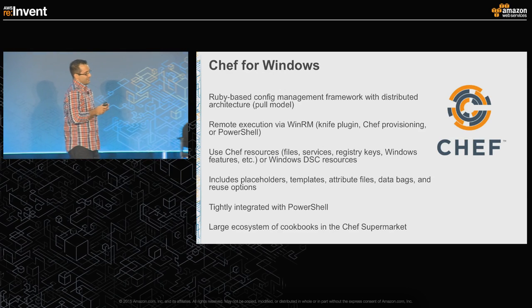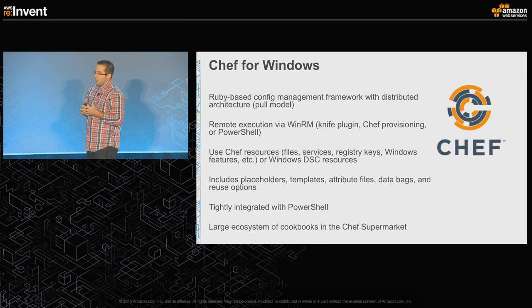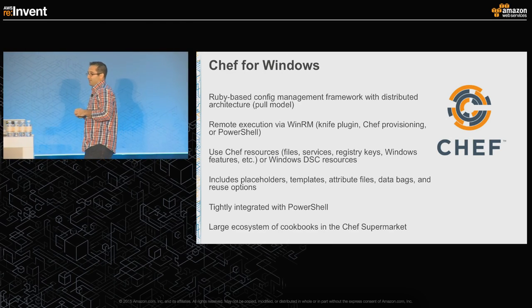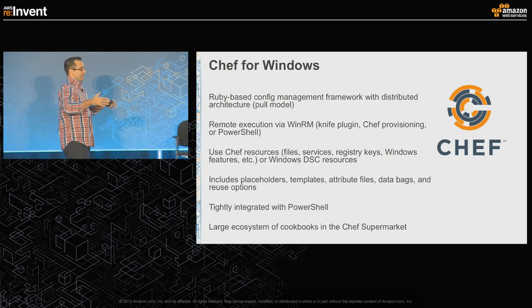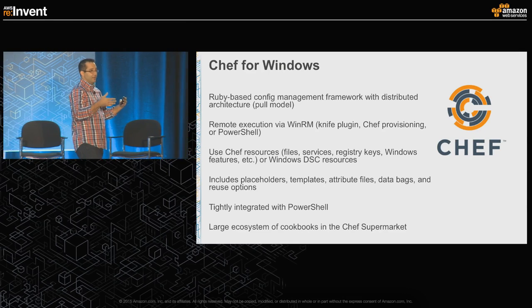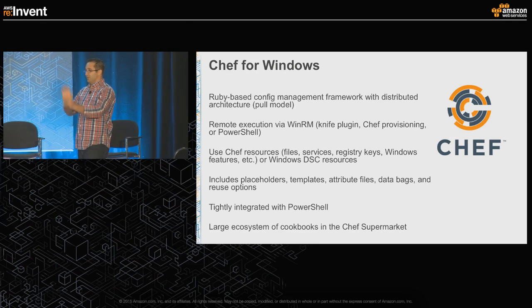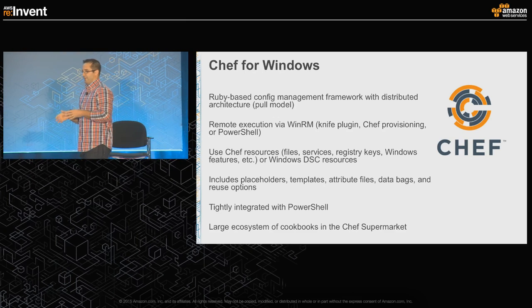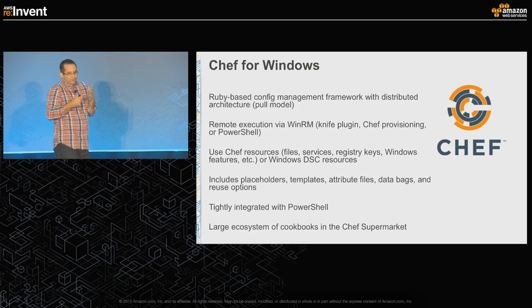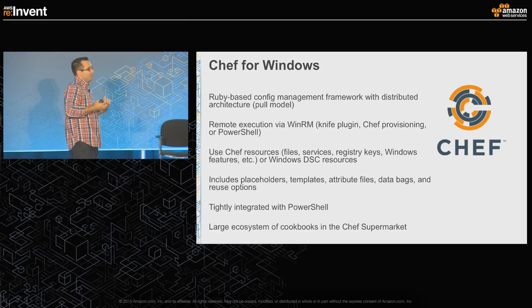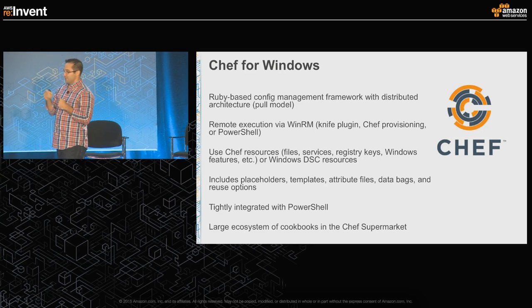Chef for Windows. Chef has become a very popular model for Windows. I talked with our friends at Chef before this session — they told me there's been a real burst in the last 18 months of people coming to their supermarket. The supermarket has cookbooks already made and available. One thing I hear from customers is: I don't want to reinvent the wheel. Domain-joining an instance, rebooting, and coming back through — somebody should have already figured that out. Chef is a good example of leveraging that ecosystem. It's a Ruby-based config management framework with a pull model, so everything is its own autonomous distributed actor capable of a lot of configuration management on your behalf.